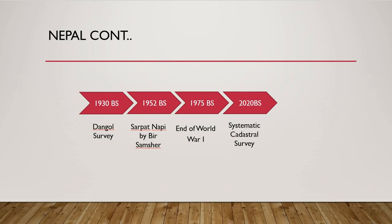Sarpat Napi started in 1952 PS by B. Somser, with units of measurement Ropani Ana in the Valley, Muri Pathi in the Hills, and Biga Katha in the Tarai. Systematic terrestrial survey was done after 2020 BS.